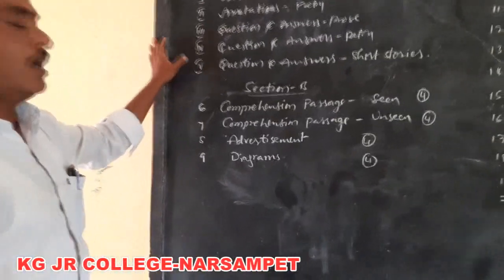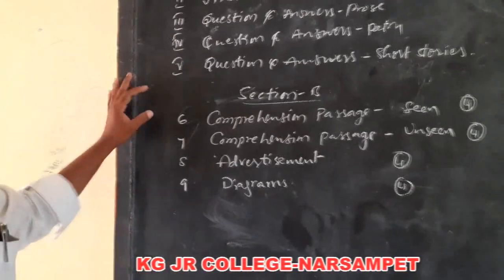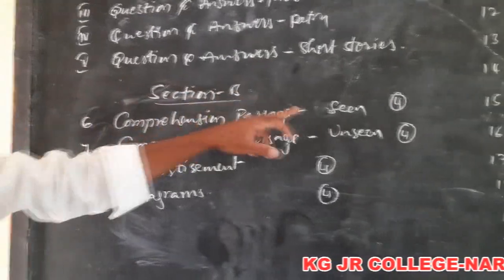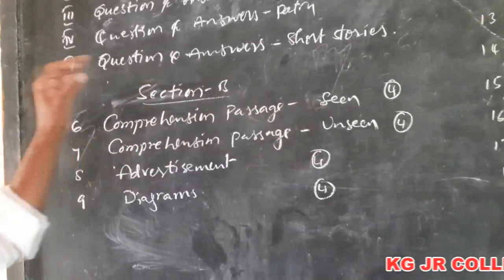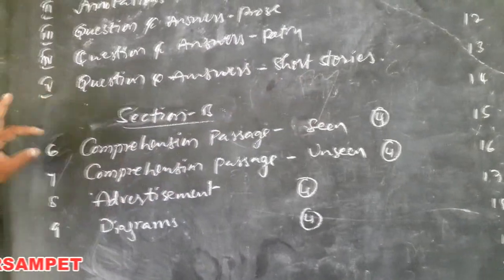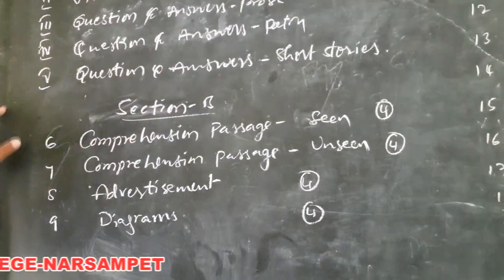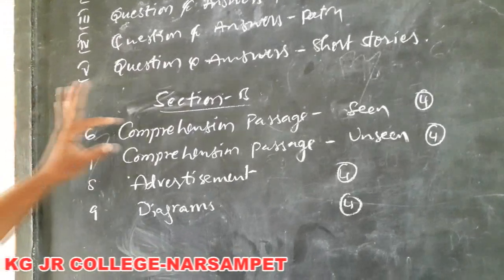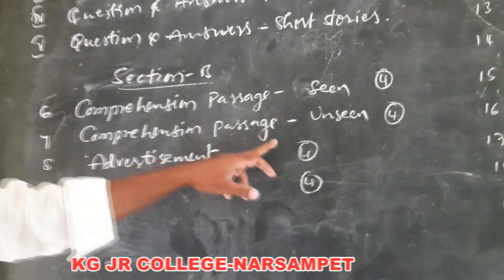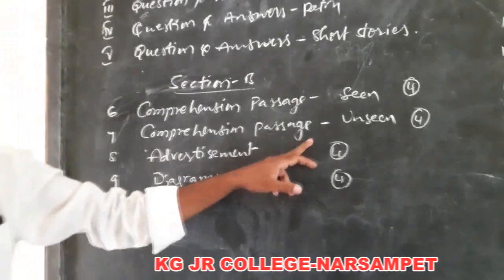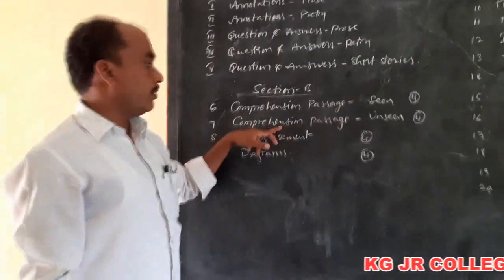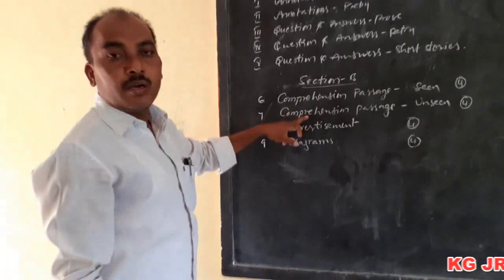Now Section B starts with the comprehension passage — that is the seen passage, which will be from short stories. Six questions are given and you have to attempt all six. The next one is the unseen passage; your textbook consists of 13 unseen passages and each lesson consists of two to three passages. It also has six questions and you have to attempt all six.